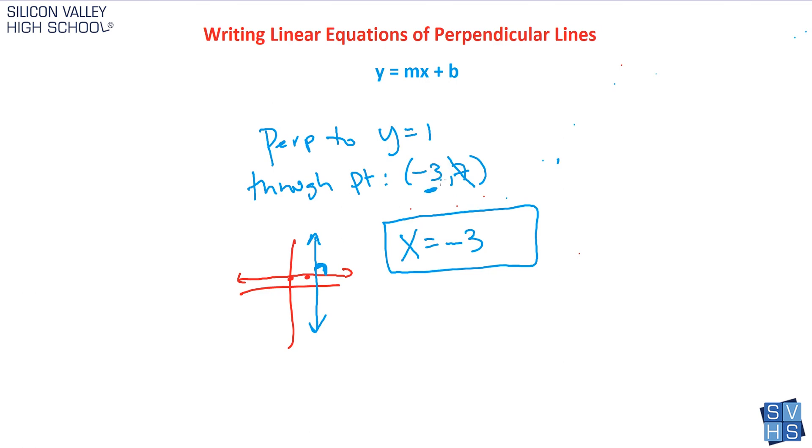So if we actually graphed it, which it does not ask to do that, you would know that it's actually over here. One, two, three, negative three, and it would look like this. And yes, that totally crosses at exactly 90, so he is perpendicular.